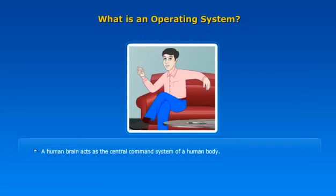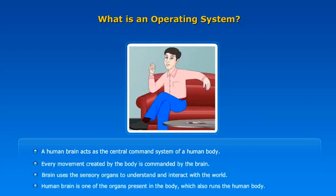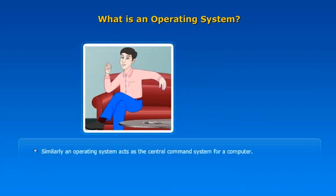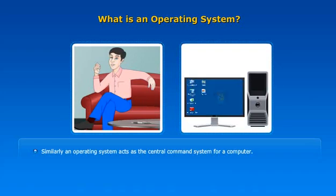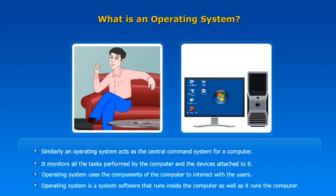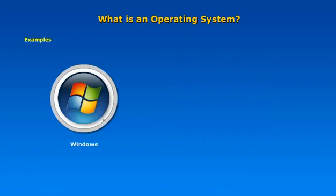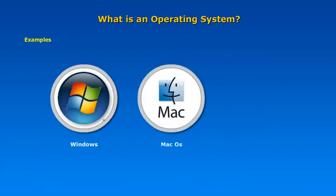A human brain acts as a central command system of a human body — every movement created by the body is commanded by the brain. Similarly, an operating system acts as a central command system for a computer. It monitors all the tasks performed by the computer and the devices attached to it. An operating system is system software that runs inside and controls the computer. Examples include Windows, Mac, and Linux operating systems.